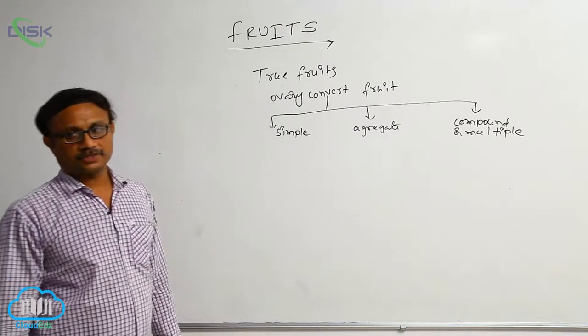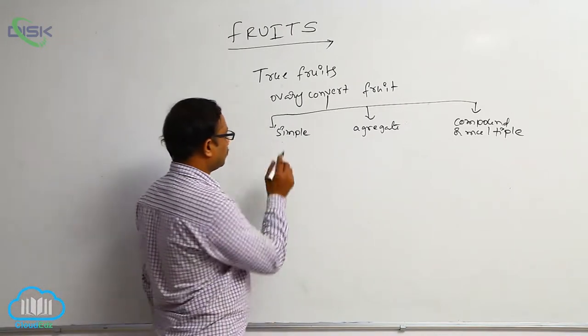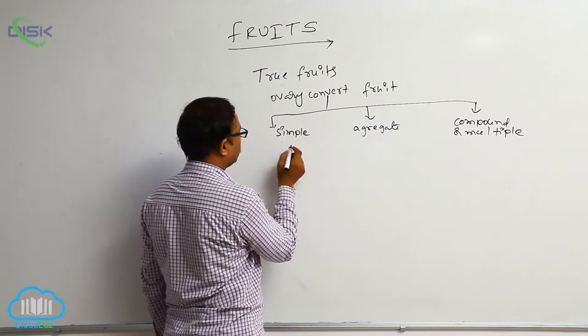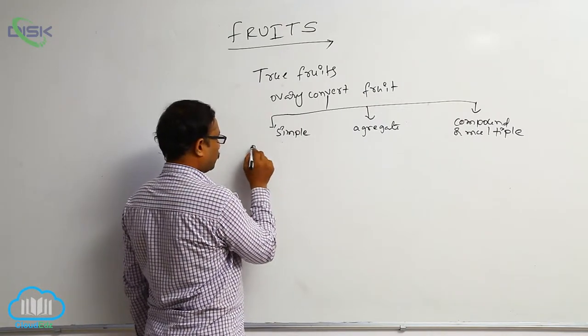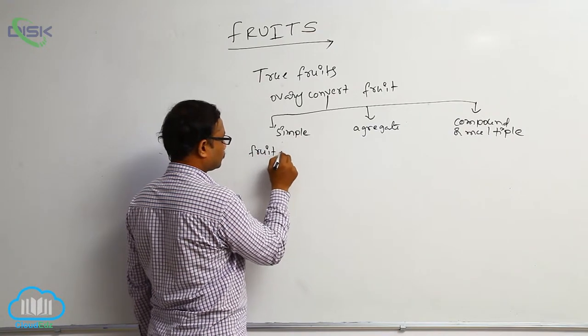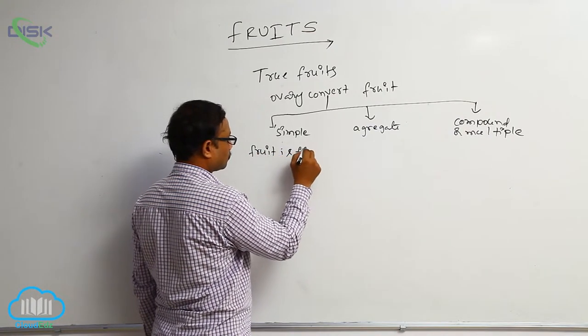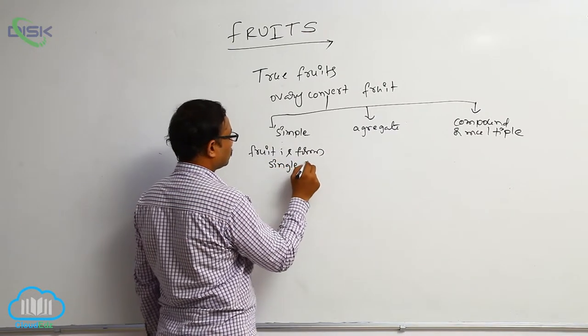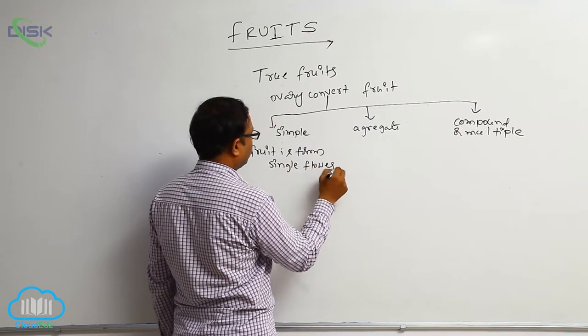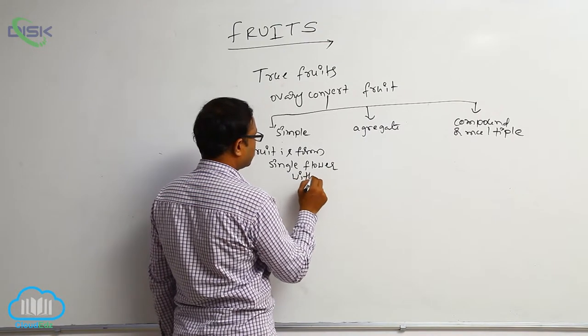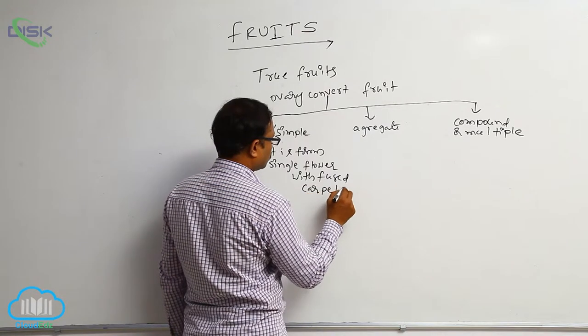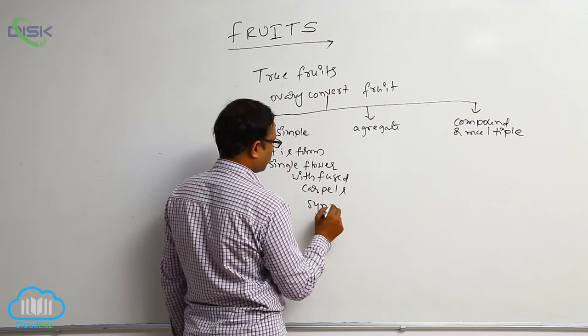Simple fruits, simple and aggregate. Simple means the fruit formation is occur by the single flower. So, fruit is formed single flower with fused carpals. Fused carpals. That is known as the syncarpus.